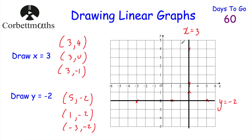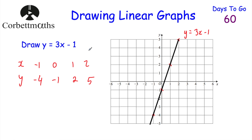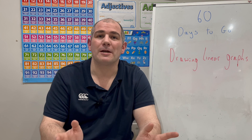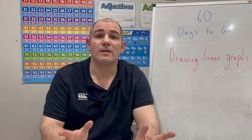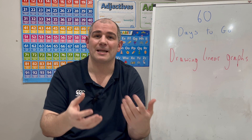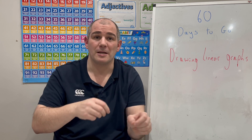In this video we've looked at how to draw x equals graphs — vertical lines through a number on the x-axis. We've looked at y equals graphs where y equals a number — horizontal lines through that number on the y-axis. We've looked at drawing graphs such as y equals 2x plus 1, y equals 3x minus 1, using an xy table. And we've looked at graphs like 2x plus y equals a number, using either the xy table directly or making y the subject first.